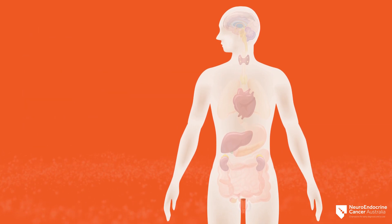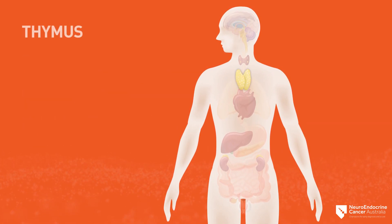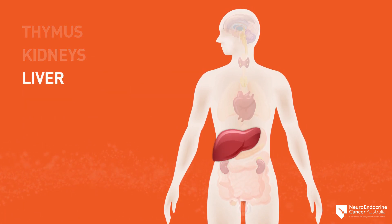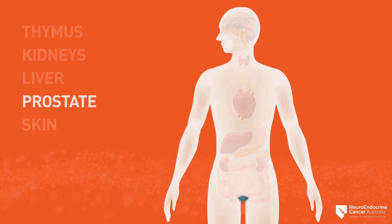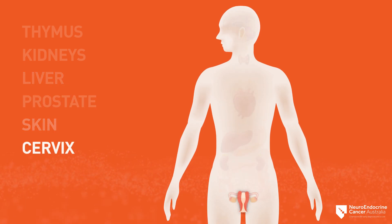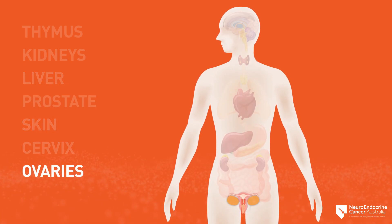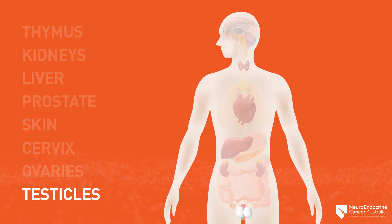Other sites of neuroendocrine cells include the thymus, kidneys, liver, prostate, skin, cervix, ovaries, and testicles.